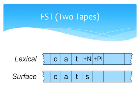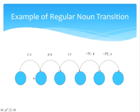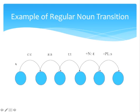So let's take a closer look at those two tapes. We have the lexical and the surface. In the lexical, we have 'cat + N + PL,' and then the surface is 'cats.' Either one can be the input tape, and either one can also be the output tape. Here is an example of the regular noun transition: input C outputs C, input A outputs A, input T outputs T, input '+N' outputs empty, and then '+PL' outputs S — so the output string is 'cats' altogether. This is going from the lexical interpretation to the surface interpretation.